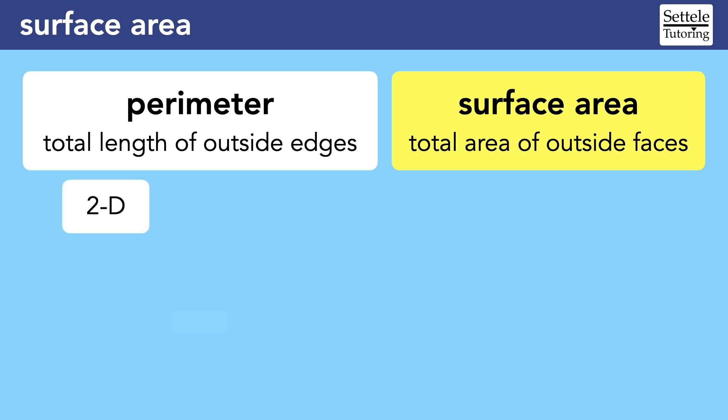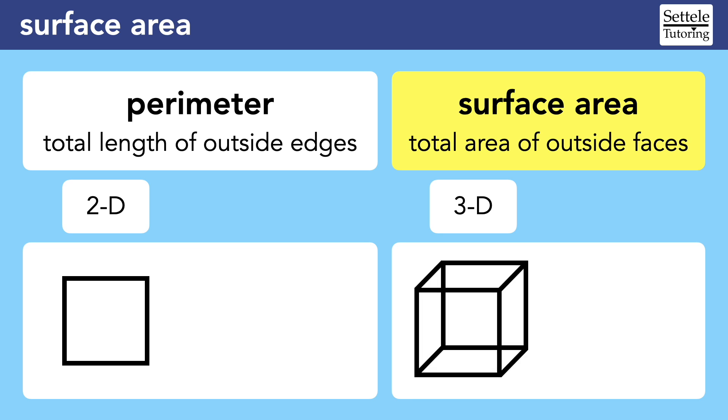Specifically, perimeter applies to two-dimensional shapes, like a square, whereas surface area applies to three-dimensional shapes, like a cube.